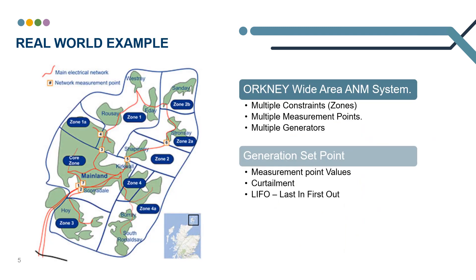Moving forward, let's have a look at a real world example. Here we have a relatively basic overview of our Orkney system. The Orkney system is made up of multiple constraints and multiple measurement points spread across the islands. There are constraints between the islands; however, ultimately, the whole system is limited by the subsea cables that feed back to the mainland.